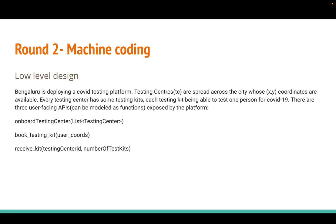The machine coding question was to build a COVID testing platform. This platform would have a set of testing centers with X-Y coordinates within a city. There are users who want to opt for testing services from these centers. You have to develop three APIs: onboarding testing center, book testing kit, and receive kit. There are specific scenarios to keep in mind for each.